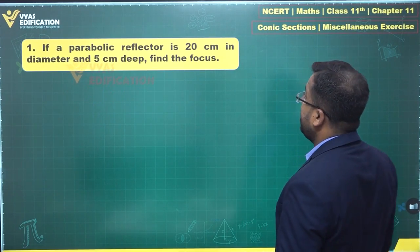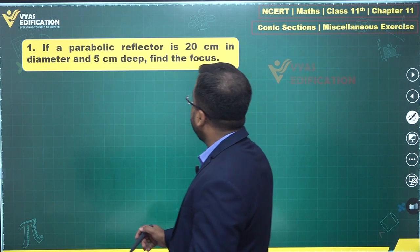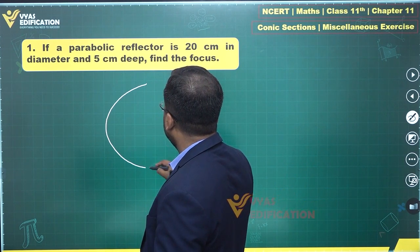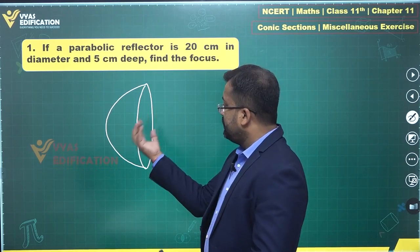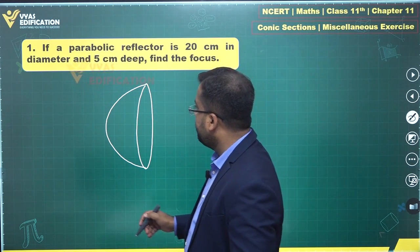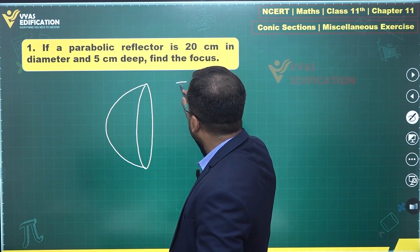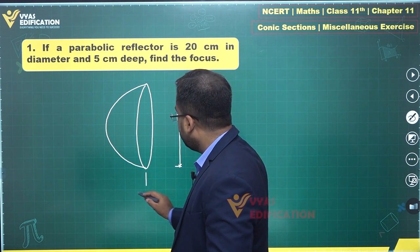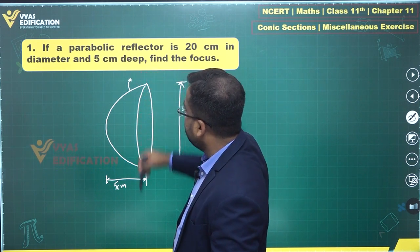The first question says: if a parabolic reflector is 20 centimeters in diameter and 5 centimeters deep, find the focus. We have a parabolic reflector — let's draw it. The parabolic shape will look like a bowl. The reflector is generally kept in a vertical position. This 20 centimeters is the diameter and the depth is 5 centimeters.